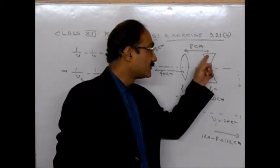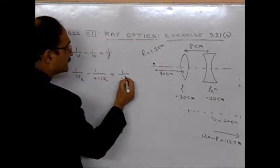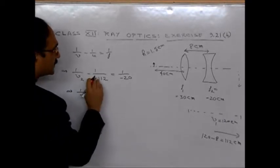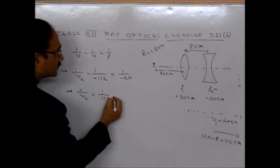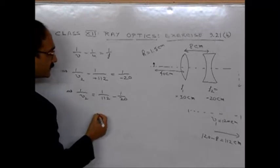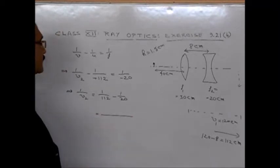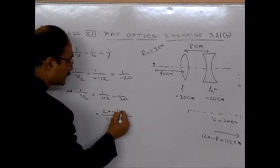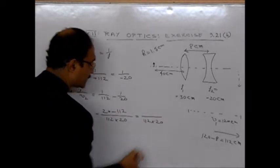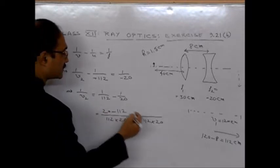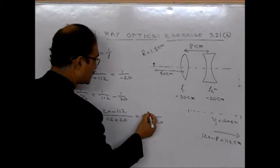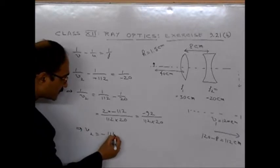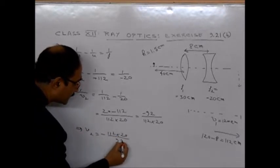1 by F. F is the focal length of the concave mirror, which is minus 20 cm. So what we get is 1 by V2 is equal to minus 1 by 20 minus 1 by 112. If you do the calculations, we will get 112 into 20 in the denominator, and 20 minus 112, which is minus 92 in the numerator.